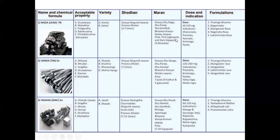The dose of Naga or Lead Bhasma is 30 to 120 mg. Indications include Dhanurvath — which means Tetanus — and Prameha, comparable to Diabetes mellitus or many urinary problems. Then Amavath — Rheumatic Conditions — Krimiroga — Roundworm, Threadworm, Hookworm, Amoeba, Giardia — all these helminth parasites. And Pandu, which is Anemia.